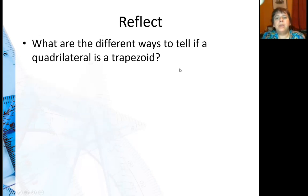So for further reflection, what are the different ways to tell if a quadrilateral is a trapezoid? One, make sure that it has only one set of parallel sides. Also, the angles that share the leg, the non-parallel side, must be supplementary.